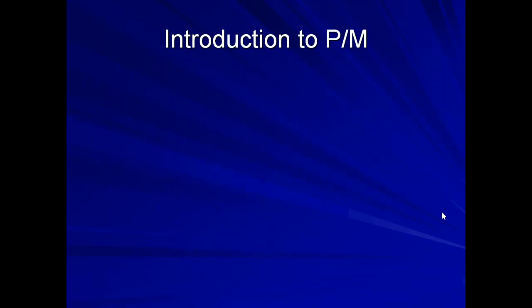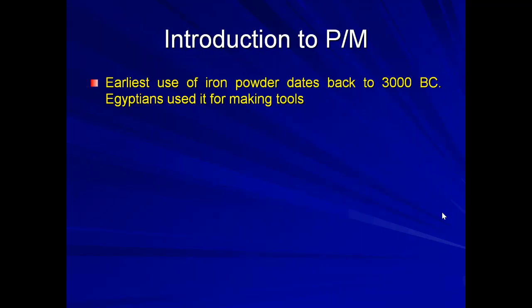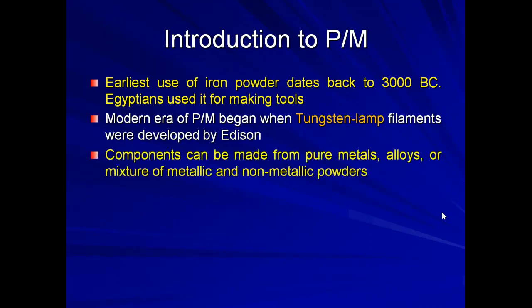The first topic is Introduction to Powder Metallurgy Process. The foremost information is that powder metallurgy dates back to 3000 BC when Egyptians used powder processes for making tools. In the present era, Thomas Elva Edison used a tungsten filament in his electric bulb, and this tungsten filament was manufactured using the powder metallurgy process. In this process, components can be made from pure metal, alloys, or mixtures of metallic and non-metallic powders.